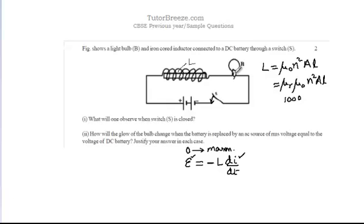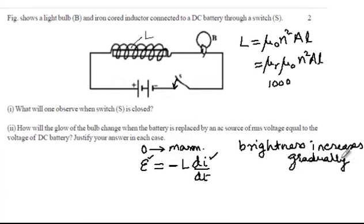So the bulb will not glow brightly in the first instance. It will take some time for it to glow, so the brightness will increase gradually. Once the current has attained its maximum value, then di/dt becomes 0, which means the induced EMF is 0. Then the brightness of the bulb will remain constant. For a very short interval of time, while the current grows from 0 to its maximum value, the brightness of the bulb will increase gradually.